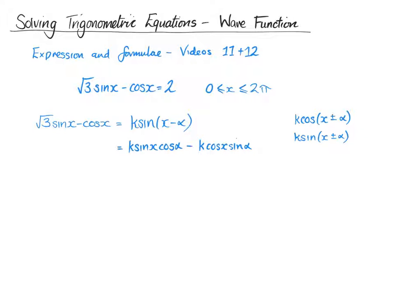So that is giving us that k cos alpha is the square root of 3 and that k sin alpha equals 1. So we have k squared equals the square root of the square root of 3 squared plus 1 squared. So that's 3 plus 1, so the square root of 4, which is 2.